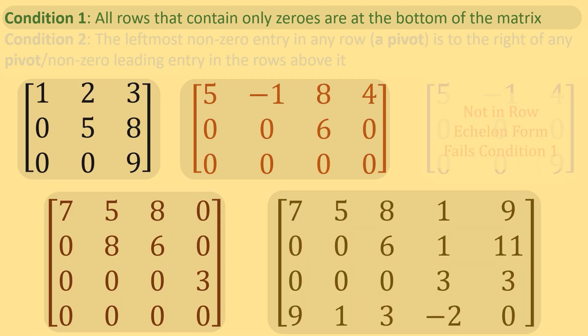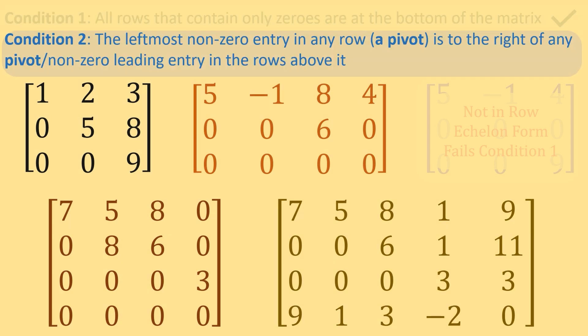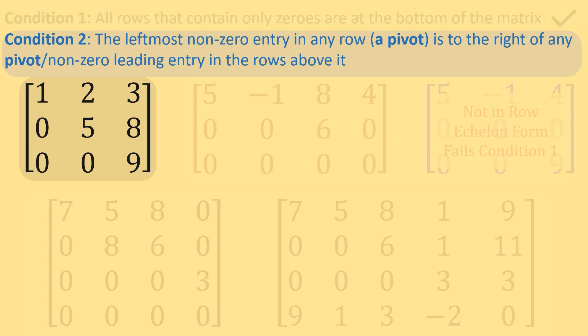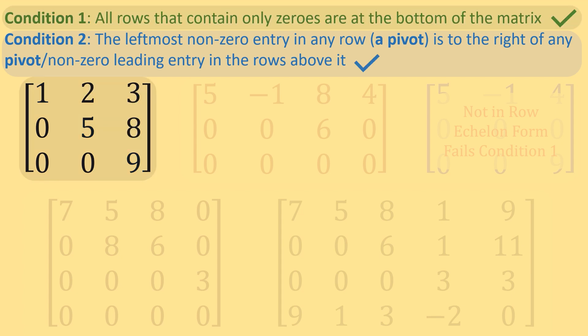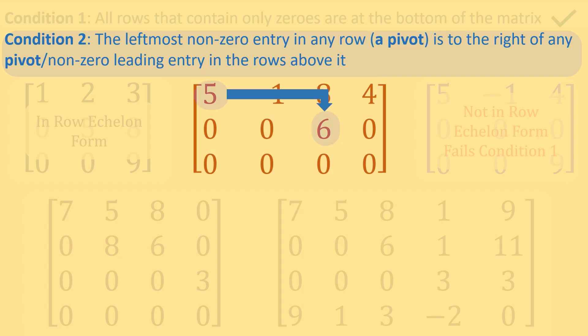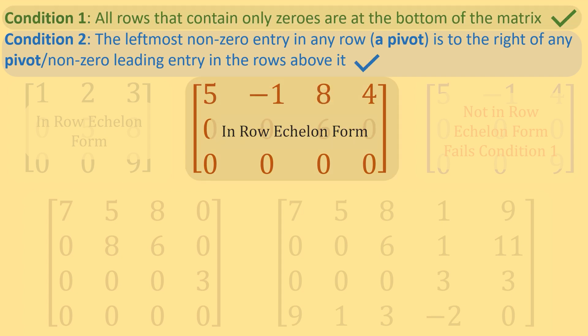All remaining matrices satisfy the first condition, so let's move on to the second condition: pivots must be to the right of all pivots above them. In the top left matrix, the five is to the right of one, and the nine is to the right of one and five — so this matrix is in row echelon form. In the top middle matrix, the six is to the right of five — this matrix is also in row echelon form.